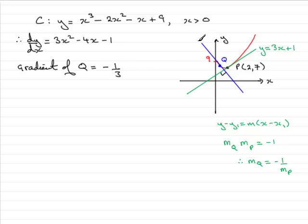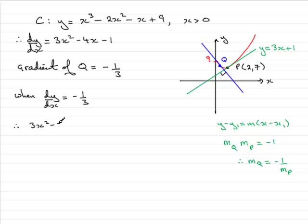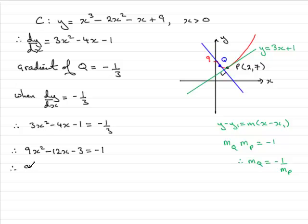That means the gradient of the tangent at Q is minus 1 third. The gradient at any point on the curve is given by dy/dx. So when dy/dx equals minus 1 third, we set up an equation: 3x² minus 4x minus 1 must equal minus 1 third. Multiplying through by 3 gives 9x² minus 12x minus 3 equals minus 1. Adding 1 to both sides gives 9x² minus 12x minus 2 equals 0.